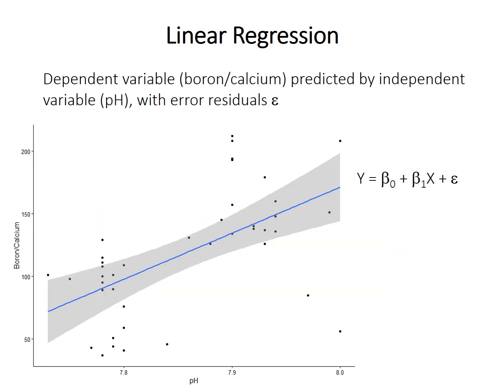So just a quick recap of linear regression — often called simple linear regression to differentiate it from multiple regression. As an example, maybe we think that the pH of seawater is one of the controls on the boron-calcium ratio measured in shells. So as our goal is a prediction, or as we may think there is a causal relationship, we'll fit a linear model with some intercept called beta 0, some slope called beta 1, and then minimize the sum of squares of the residuals.